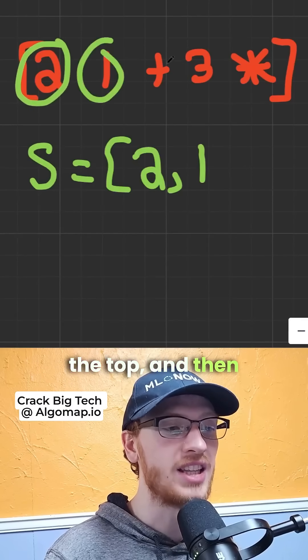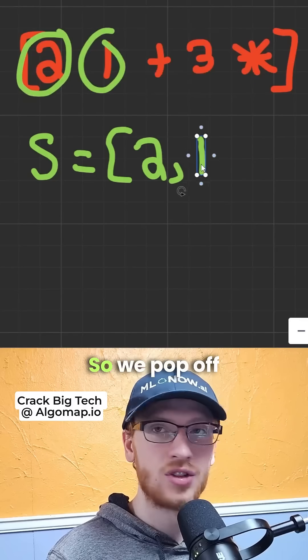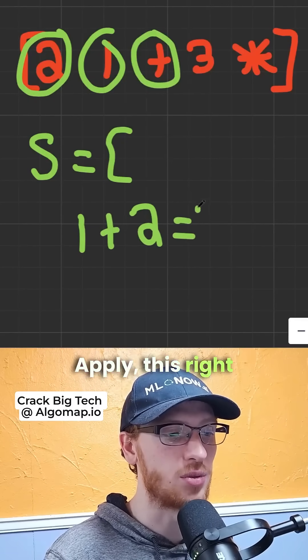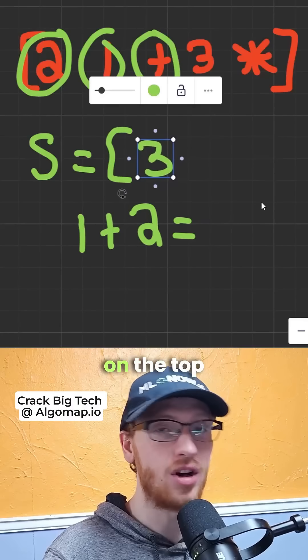So 2 goes to the top, and then we have an operation of plus. So we pop off the 1, we'll pop off the 2. So we'll do 1 plus 2, apply this right away. We are going to put that on the top of the stack.